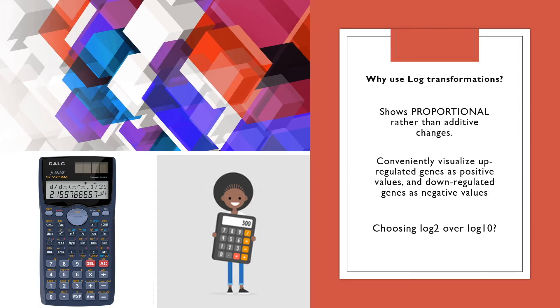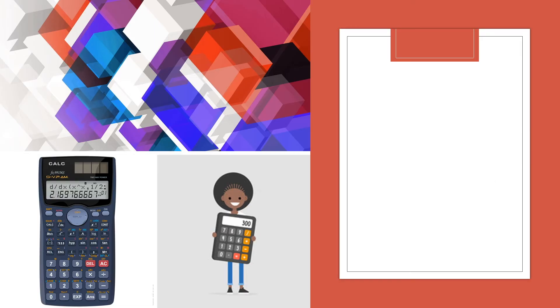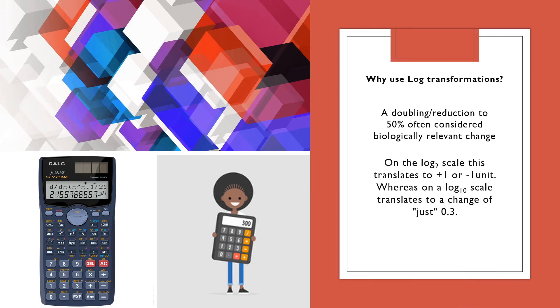In particular, why would you choose a log2 transformation over the default log10, which is really what this video has been about? Your calculator button or Excel formula will just assume it's a log10. But why would you want a log2 instead? Well, a typical example is, you know, if you have a doubling event or a reduction of 50% event, this is often considered biologically relevant. If you use a log2 scale, this translates to a plus one or minus one unit increase or decrease, whereas on a log10 scale this translates to a change of just 0.3. It doesn't look as dramatic. And so you may want to use a log2 because it's a whole unit and it just gives better scaling when your changes are a bit modest or smaller.